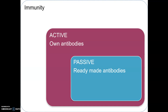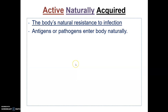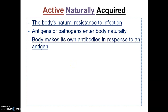Active naturally acquired immunity is the body's natural resistance to infection, where some sort of microorganism — a pathogen — enters the body. On the surface of the pathogen would be antigens, and the body makes its own antibodies in response to those specific antigens.